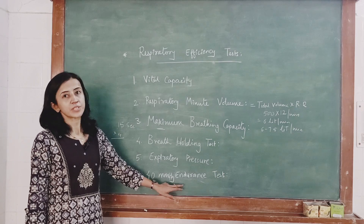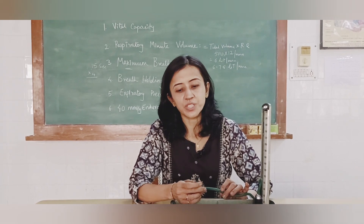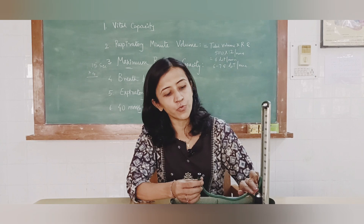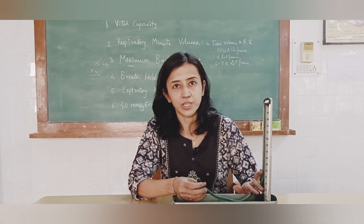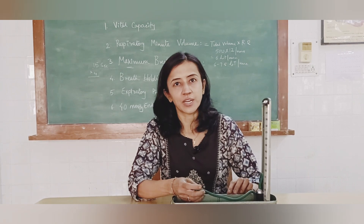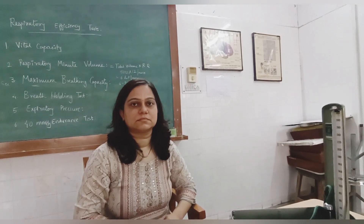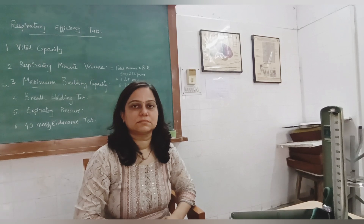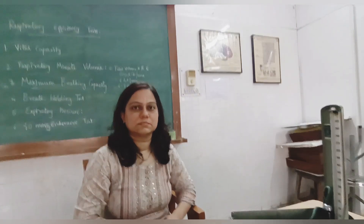Next is the 40 mmHg endurance test. Ask the subject to inspire deeply and then, with the nose closed, expire into the rubber tube and raise the mercury column up to 40 mm of mercury and maintain this for as long as possible. The procedure is stopped when the pulse rate increases appreciably. The normal minimum time for which this can be maintained without an appreciable rise in pulse rate is about 50 seconds.